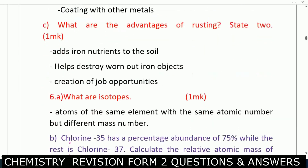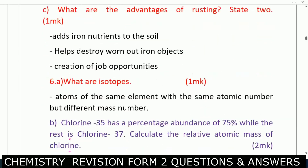What are the advantages of rusting? State two advantages of rusting. Number one: adding ions as nutrients to the soil. Number two: helps destroy worn-out iron objects. Also, creation of job opportunities.